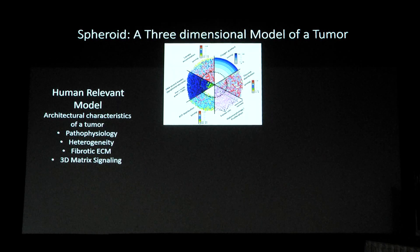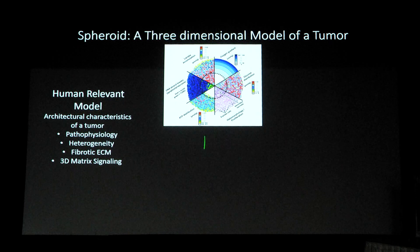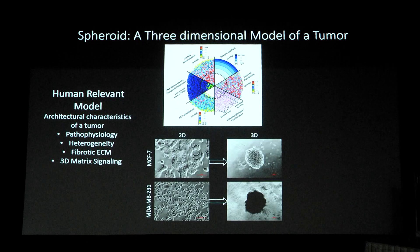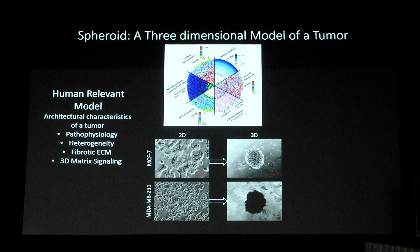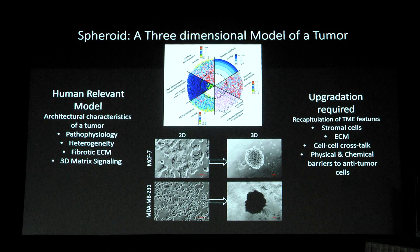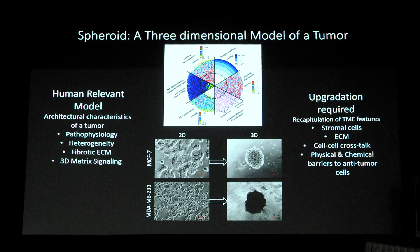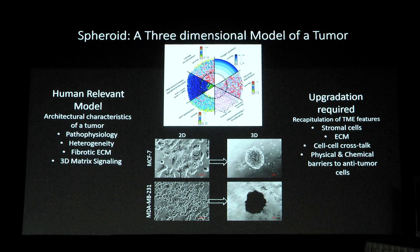Our lab works with 3D tumor spheroids, which mimic the pathophysiological gradients present in in vivo tumors. We work with breast cancers — I culture breast cancer cell lines MCF7 and MDA-MB-231 using the liquid overlay method, and they form beautiful compact three-dimensional sphere-like structures called spheroids. To overcome the inherent limitations of this model, I upgraded it to recapitulate tumor microenvironmental features, including tumor cell-ECM crosstalk and the physical and chemical barriers that an immune cell faces while reaching the tumor microenvironment.